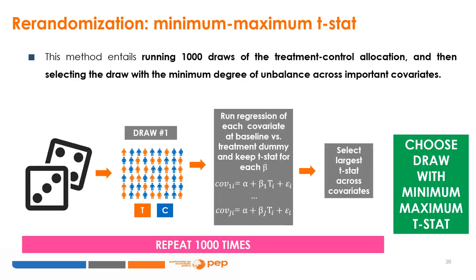The minimum-maximum t-stat method entails running 1,000 draws of the treatment-control allocation and selecting the draw with the minimum degree of imbalance across important covariates. For each draw, run a regression of each important baseline covariate on the treatment dummy and save the t-stat for its coefficient. The highest t-stat among all covariates is selected — representing the greatest imbalance in that draw. After repeating this 1,000 times, the draw showing the minimum t-stat among all draws is chosen. This is the min-max t-stat: the draw whose worst imbalance is the least unbalanced among all draws.